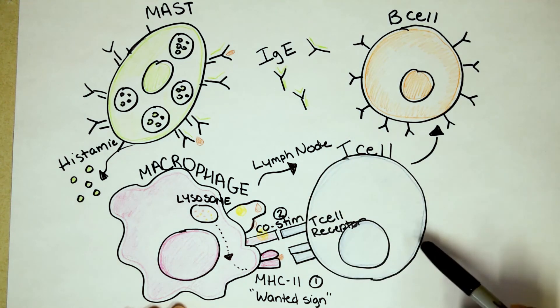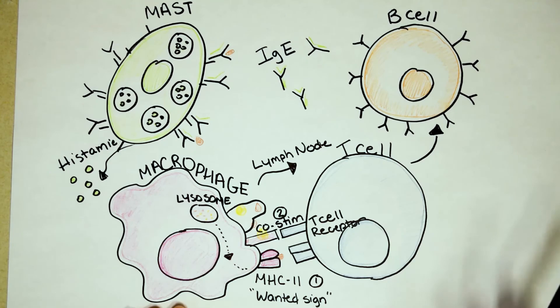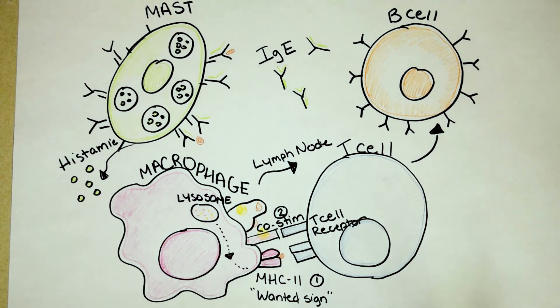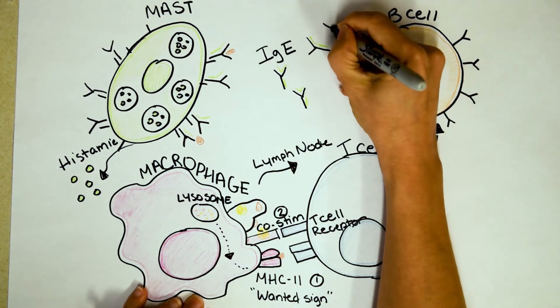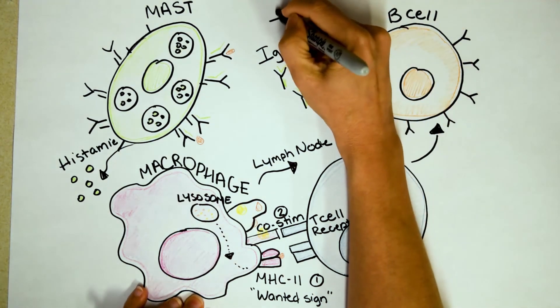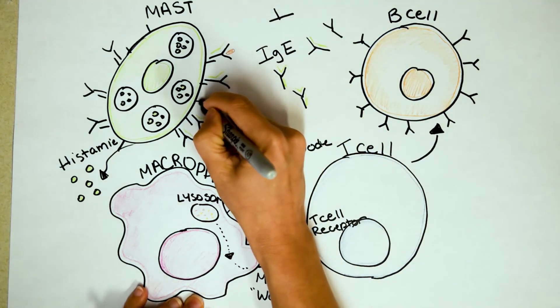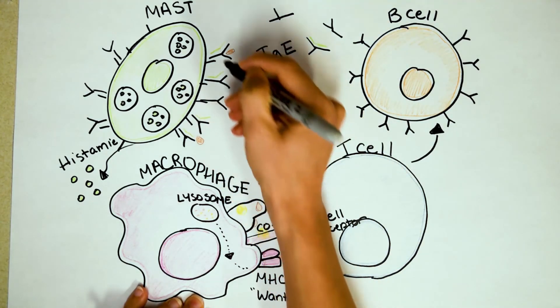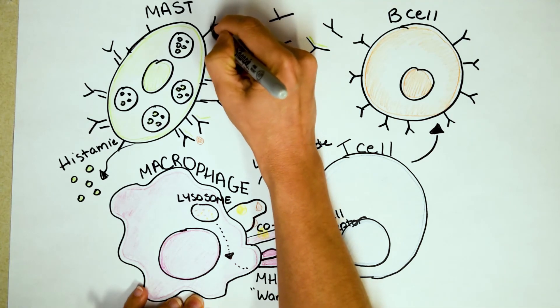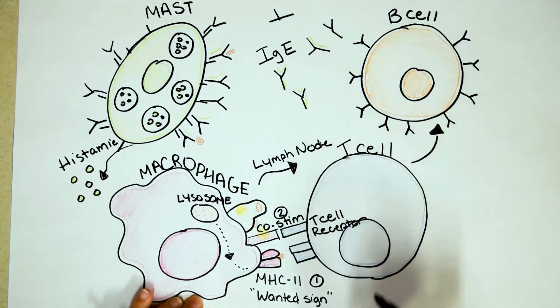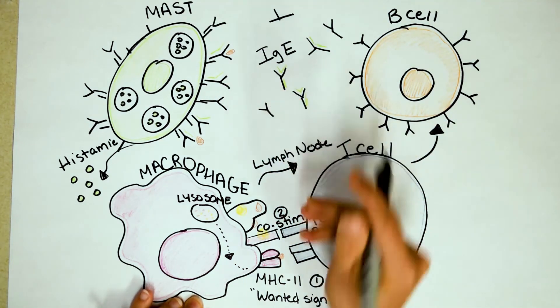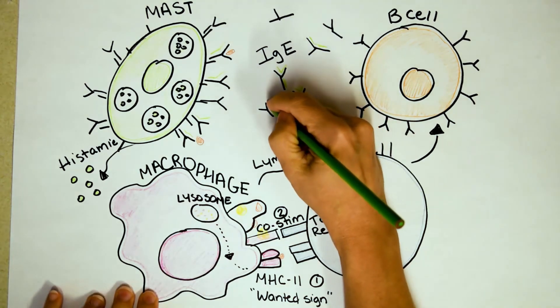So every time you eat that sesame bagel, there's more. There's more antibodies. And then the mast cell can wear more antibodies. And that's why every time the allergies can feel, basically, worse. And they can even happen faster, because the mast cells are already geared up.